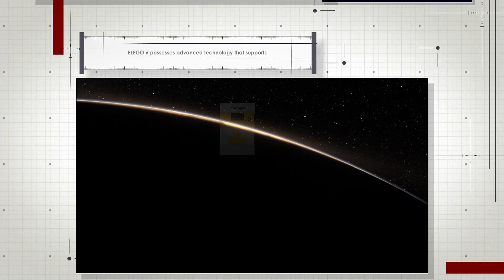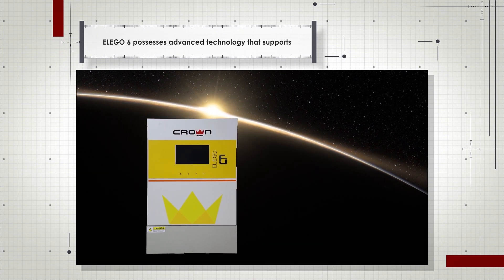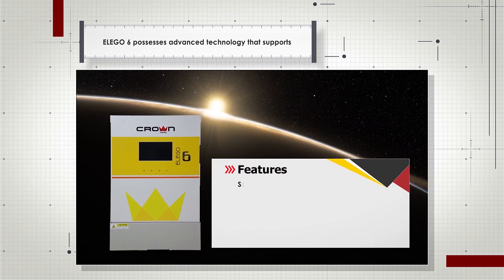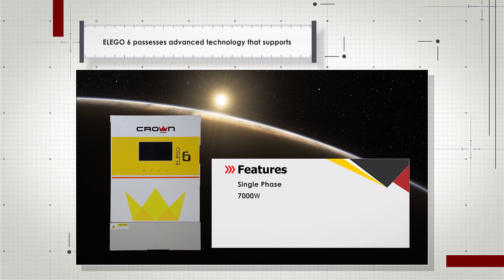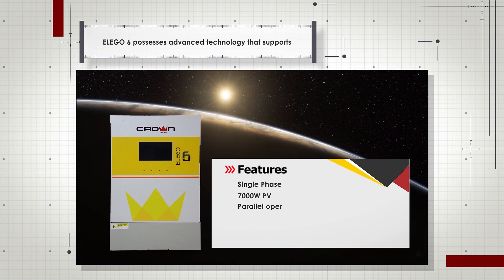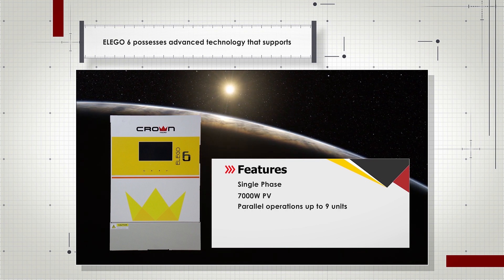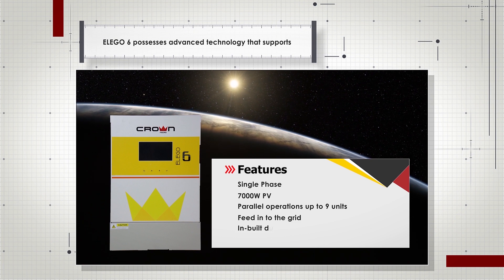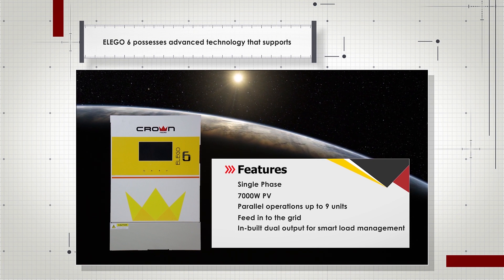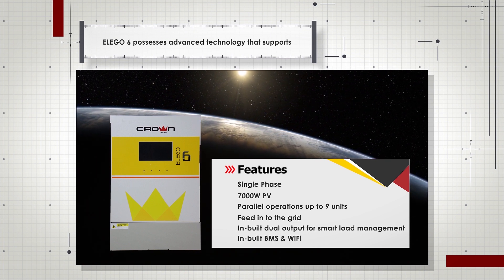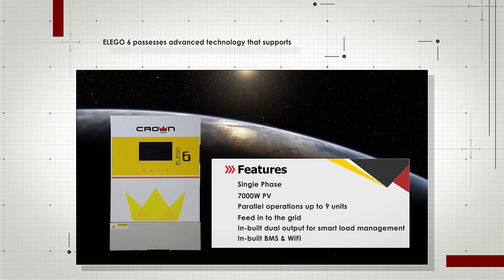La Go 6 possesses advanced technology that supports single phase 7000 watt PV parallel operations up to nine units, feed into the grid, inbuilt dual output for smart load management, inbuilt BMS and Wi-Fi. Let's go through the phases of installation of La Go 6.